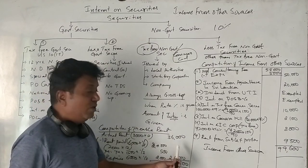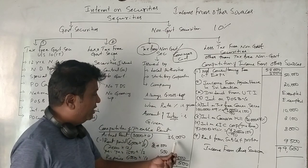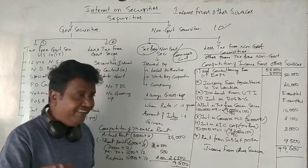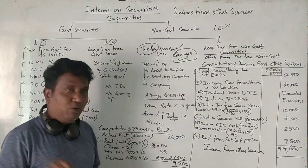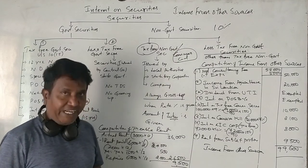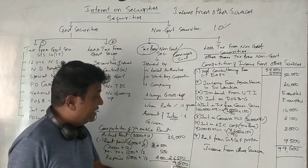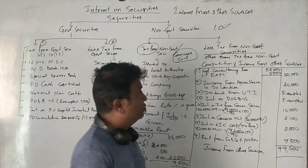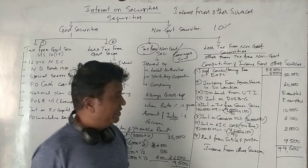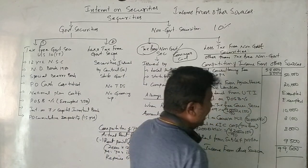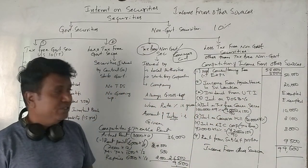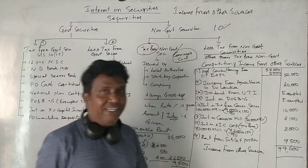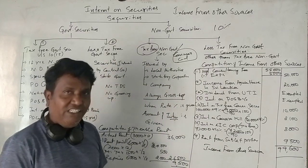The rent received is ₹36,000 and the total expenses are ₹26,500. So the net income from subletting is ₹9,500. This is then added to income from other sources. Thank you so much.